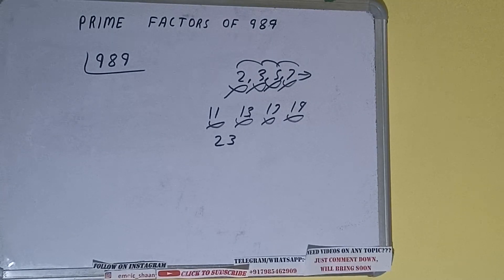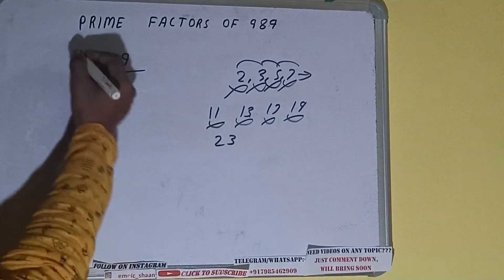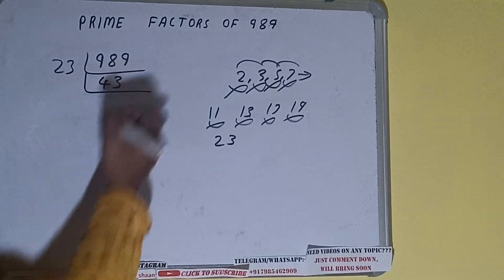23, 9—with 23 it is divisible! So divide it. 23 times 4 is 92, 23 times 3 is 69.